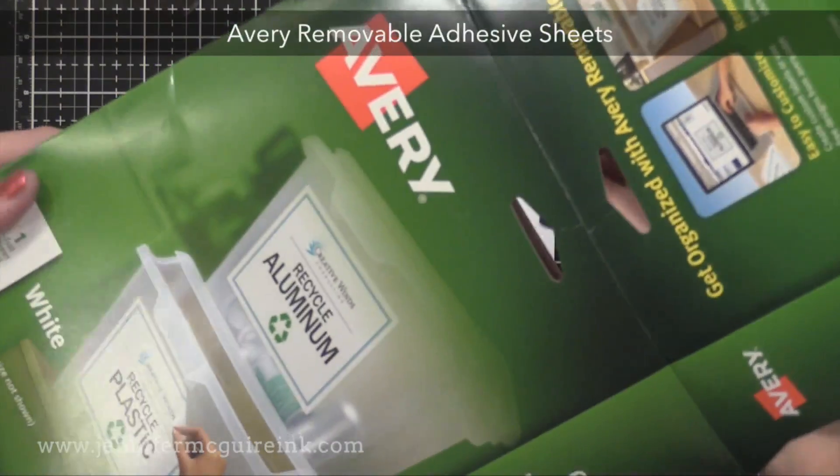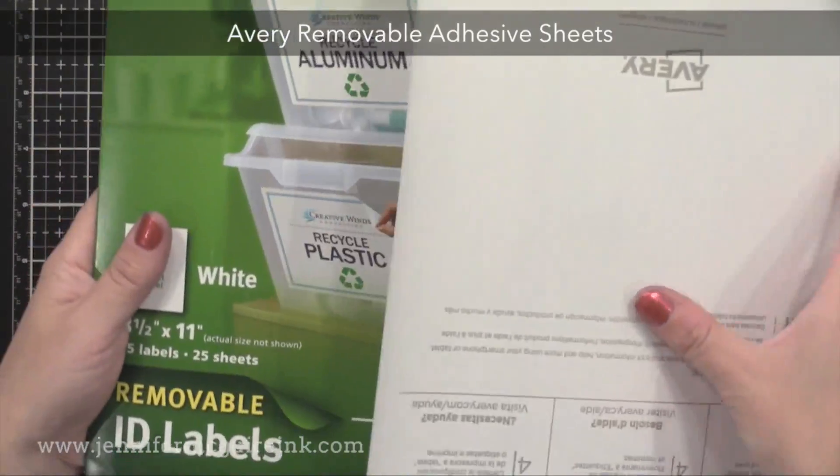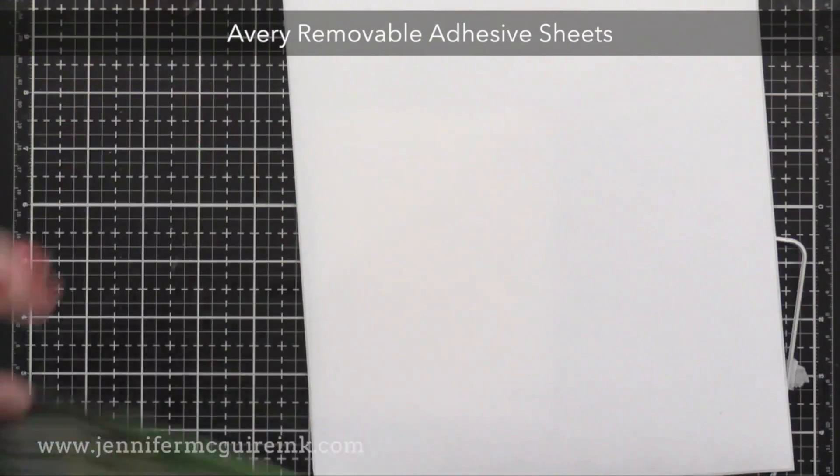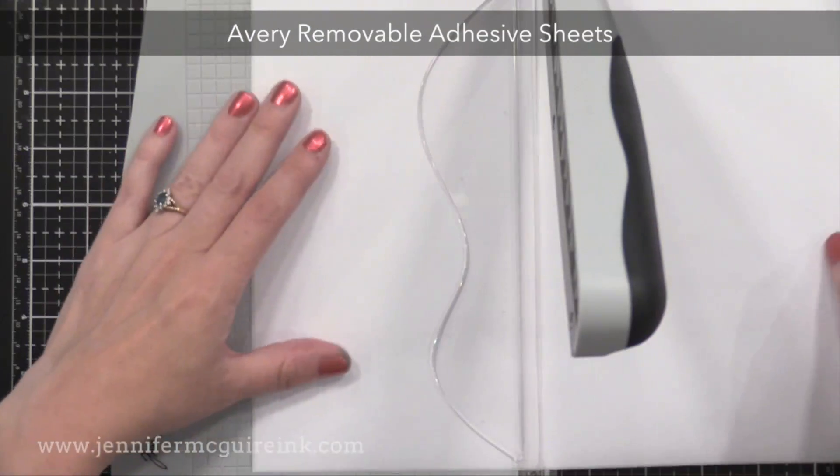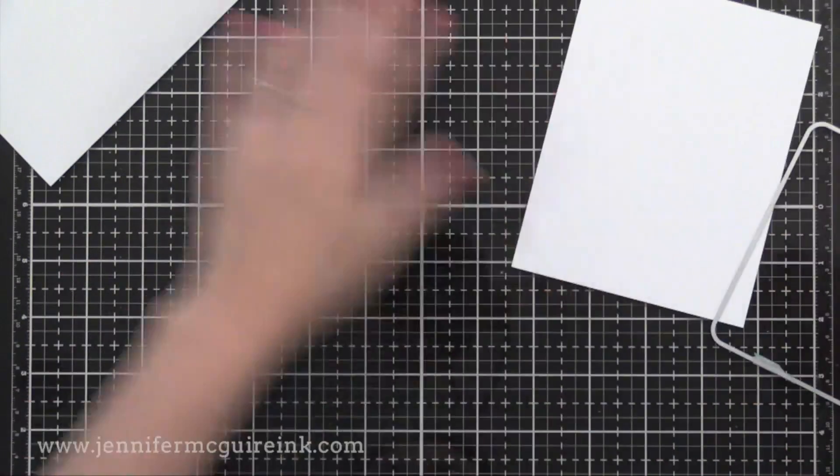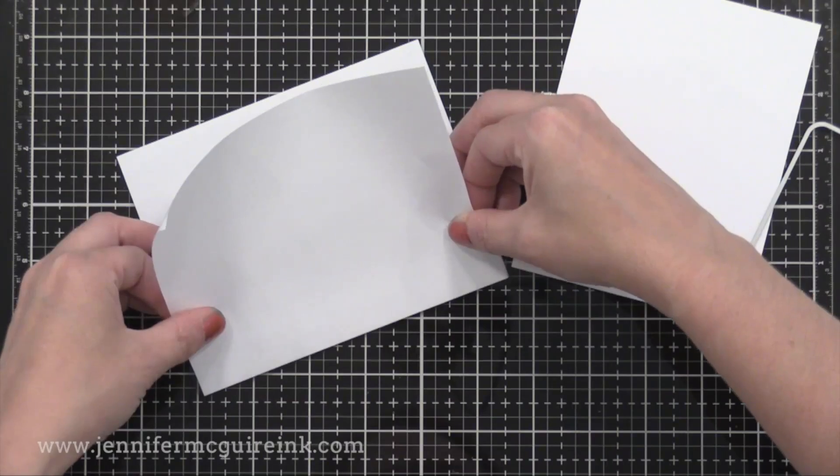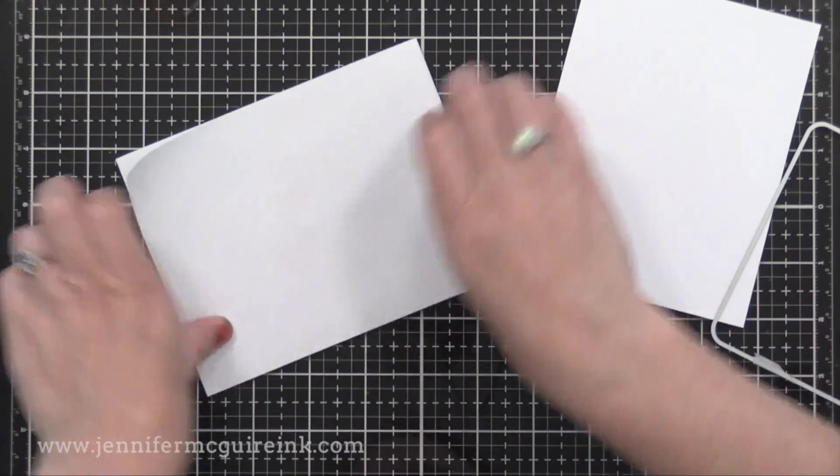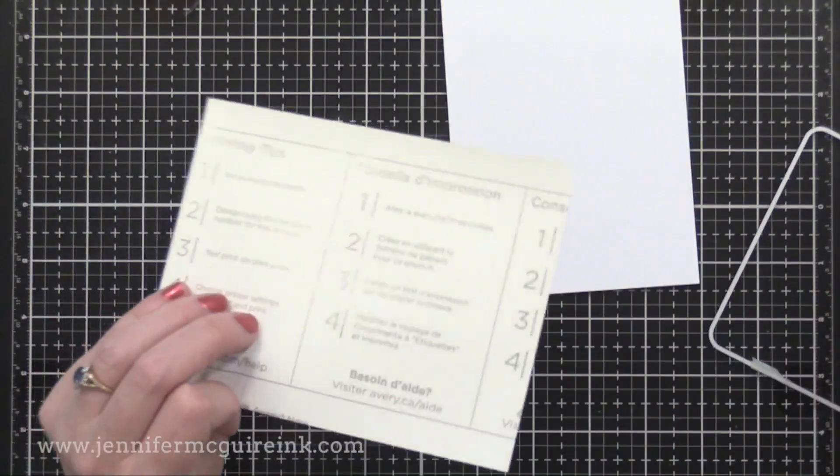I first wanted to do a masked frame. So I'm using Avery removable adhesive sheets. And I trim them down so I had two that were four and a quarter by five and a half. I'm doubling up this masking paper. So I'm putting one right on top of the other because I'm putting black ink over and I didn't want it to bleed through one layer.